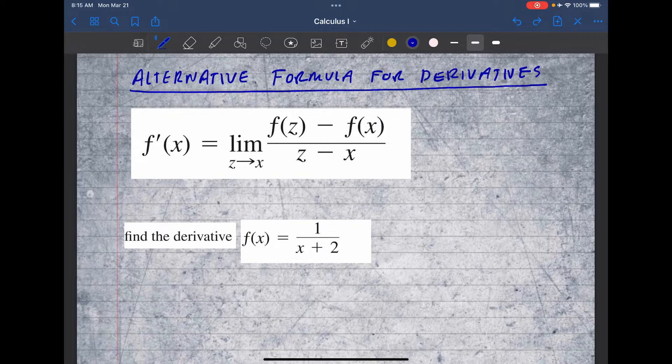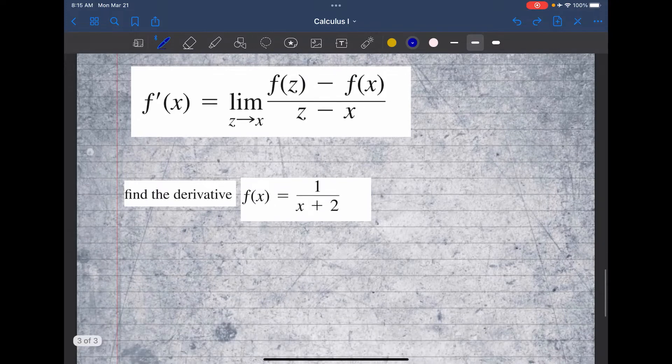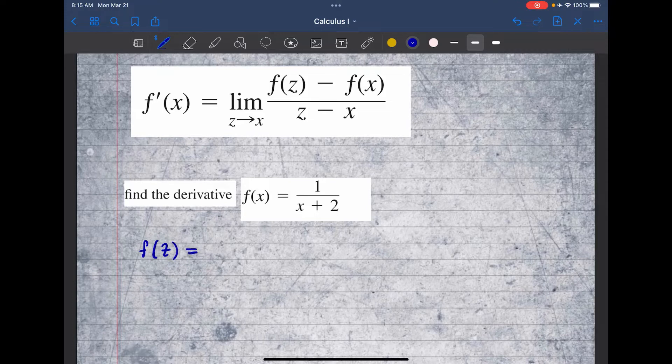This is the alternative form of the limit definition you've seen quite often by now. Let's use this formula to find the derivative of this function. We need to find what f(z) is. f(z) is simply plugging in z where there is x in the function. So f(z) would simply be 1 over z plus 2.